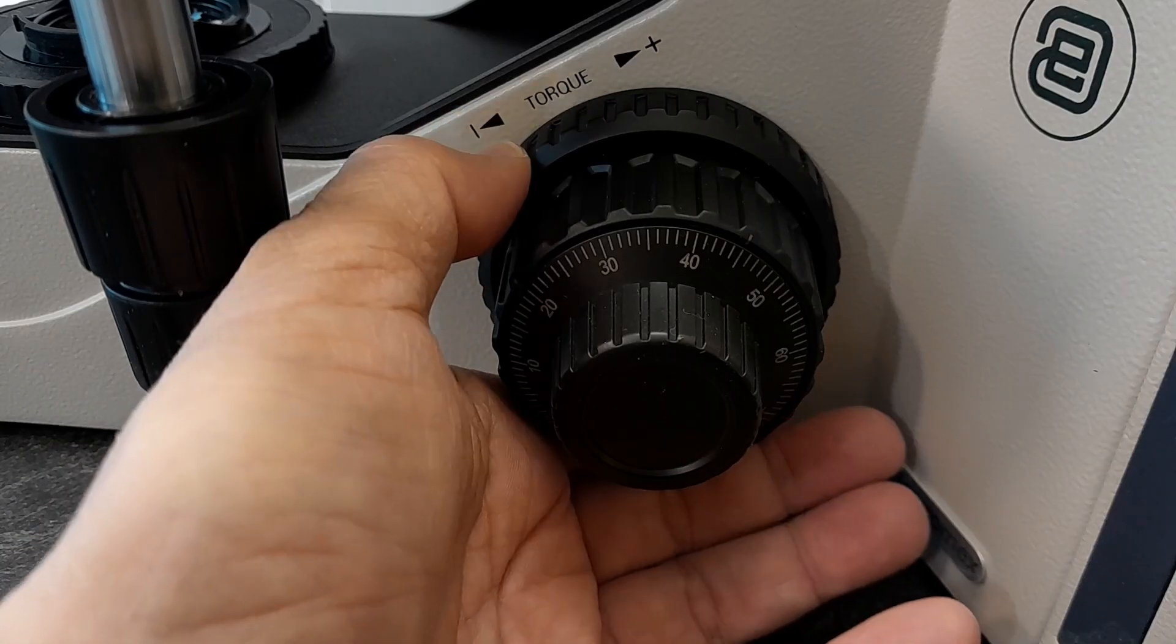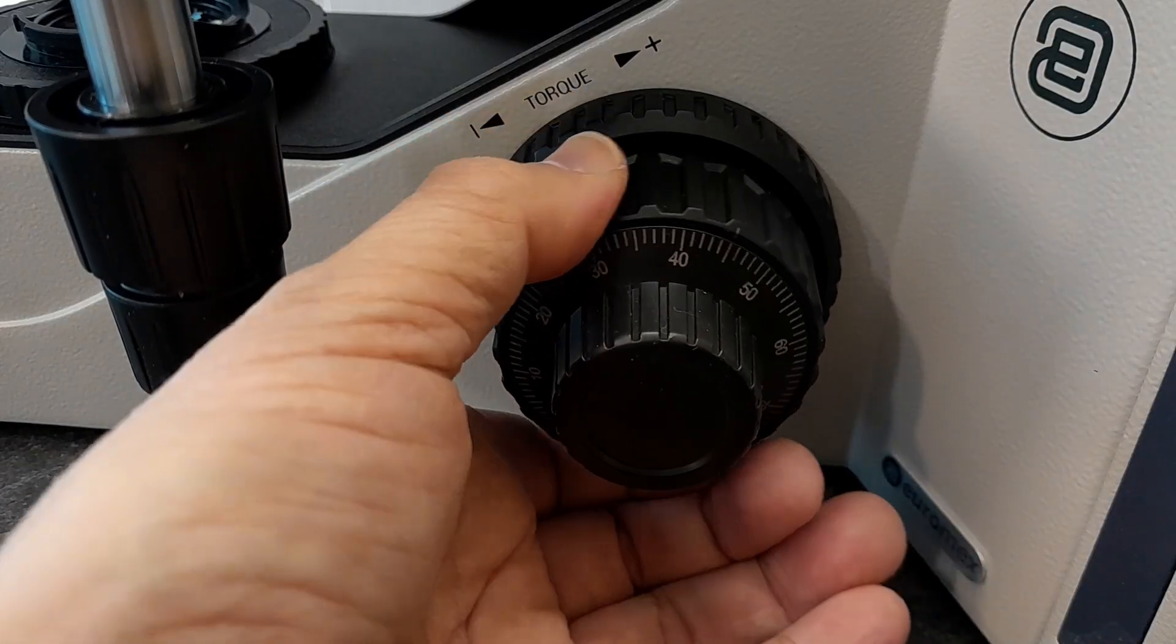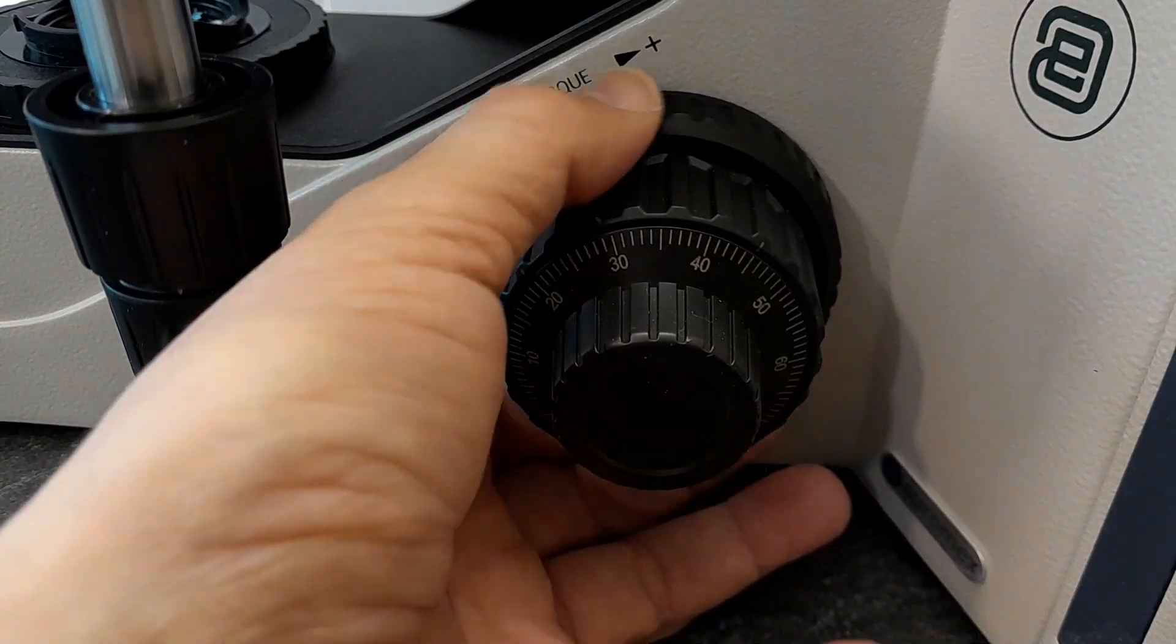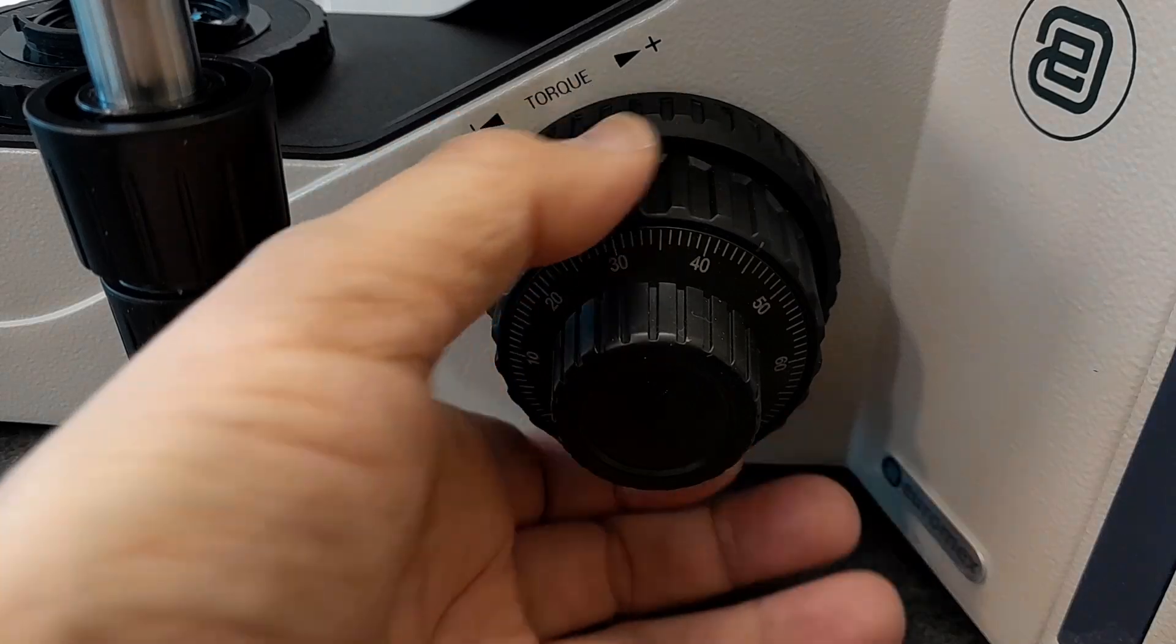The tension, the torque of the focus knobs can also be adjusted. There is a ring on the right side of the microscope so you see a strong emphasis is placed on ergonomics and user friendliness and usability.